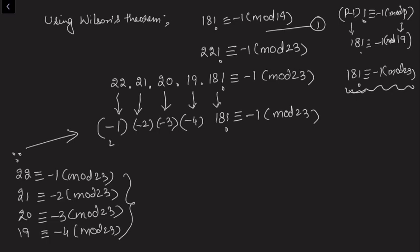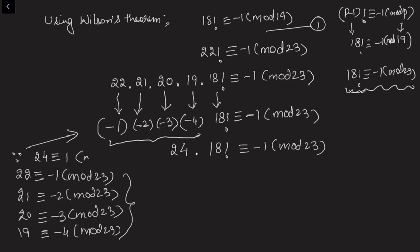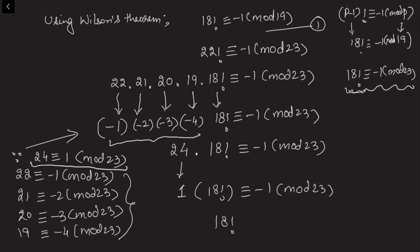Multiplying these terms: there are four negative signs, an even number, so the product is positive. We get (-1)(-2)(-3)(-4) × 18! = 1 × 2 × 3 × 4 × 18! = 24 × 18! ≡ -1 (mod 23). Since 24 ≡ 1 (mod 23), this becomes 1 × 18! ≡ -1 (mod 23), so 18! ≡ -1 (mod 23). This proves the second congruence.